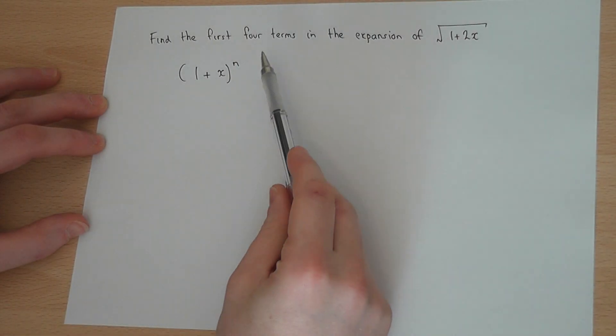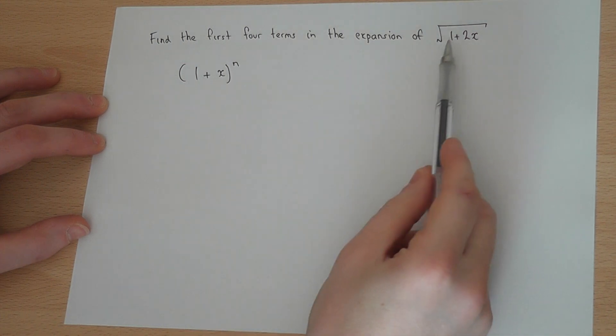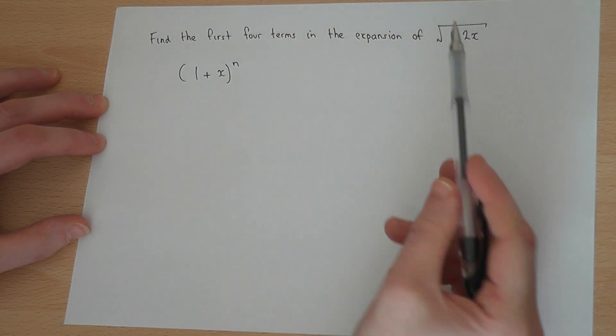This video looks at how to expand a function of the form a plus bx to the power of a half, in this case a square root.